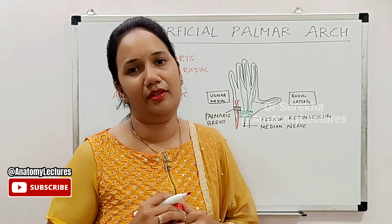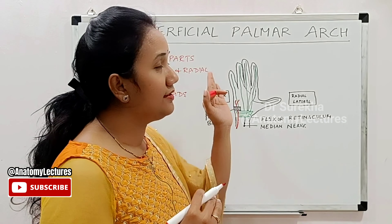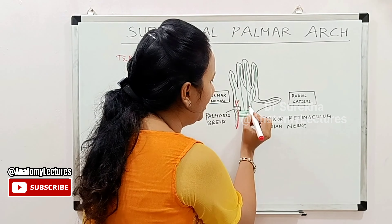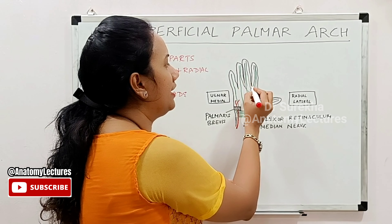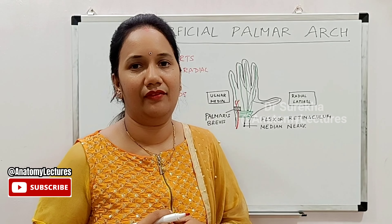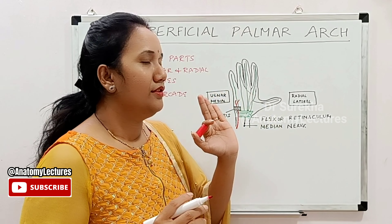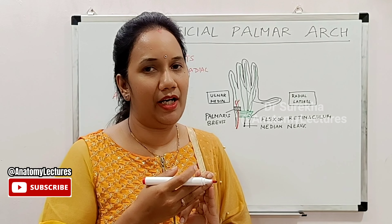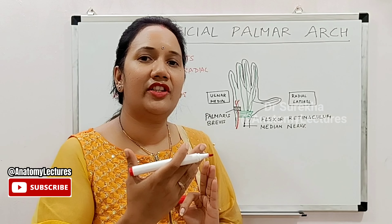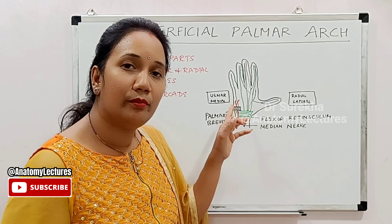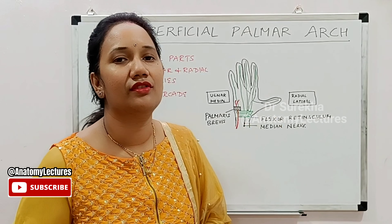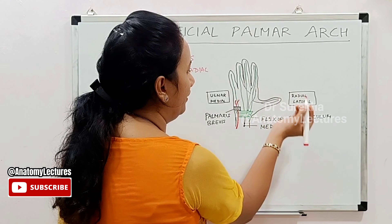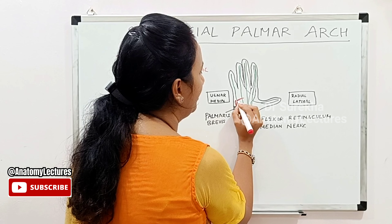A subcutaneous muscle called the palmaris brevis is present. The ulnar artery passes deep to the palmaris brevis muscle, where it divides into a deep and a superficial branch. The deep branch passes deep to the flexor tendons, and the superficial branch passes superficial to the flexor tendons.